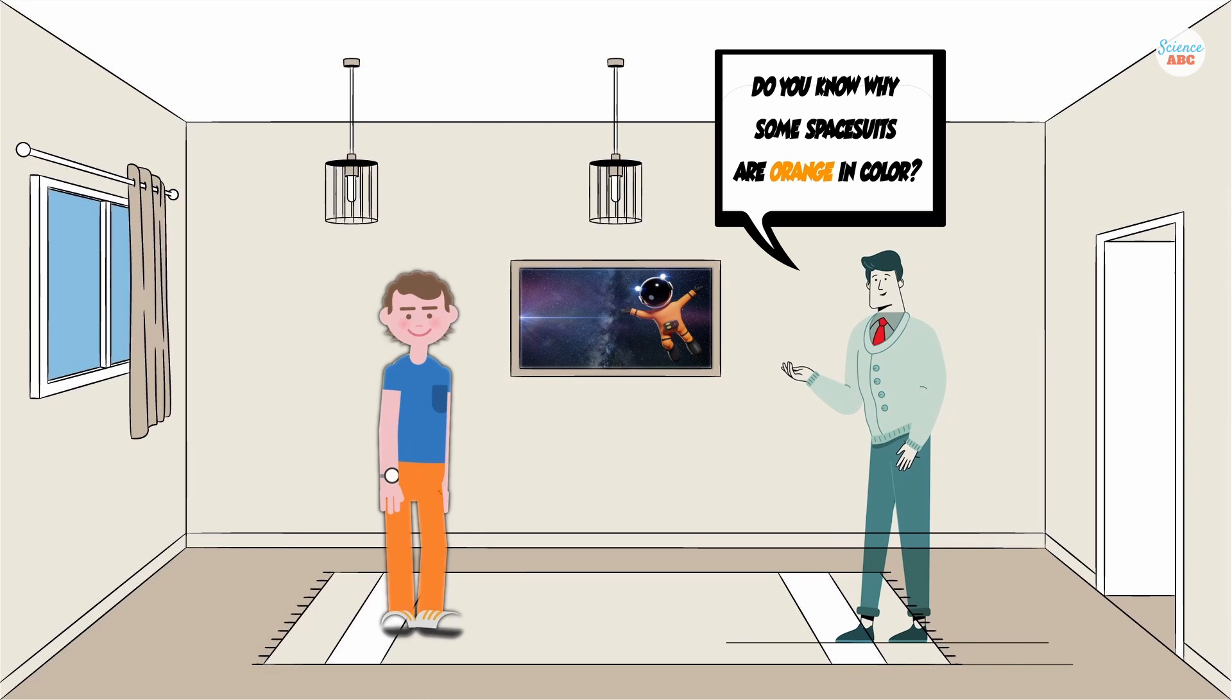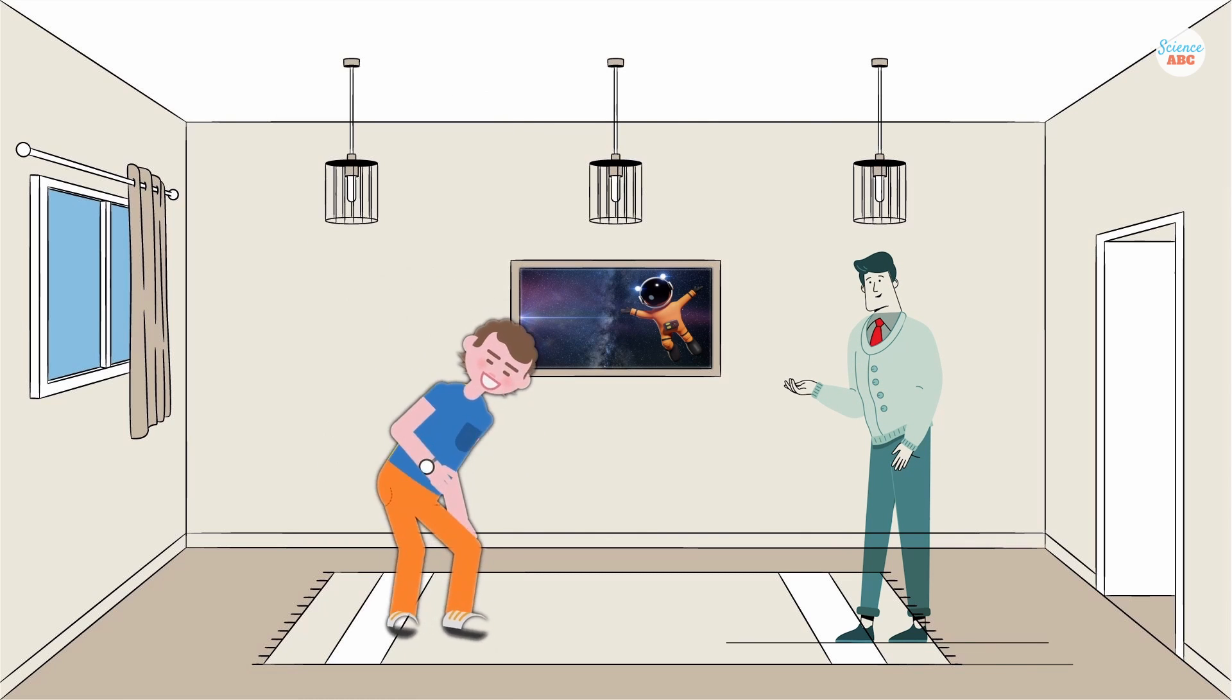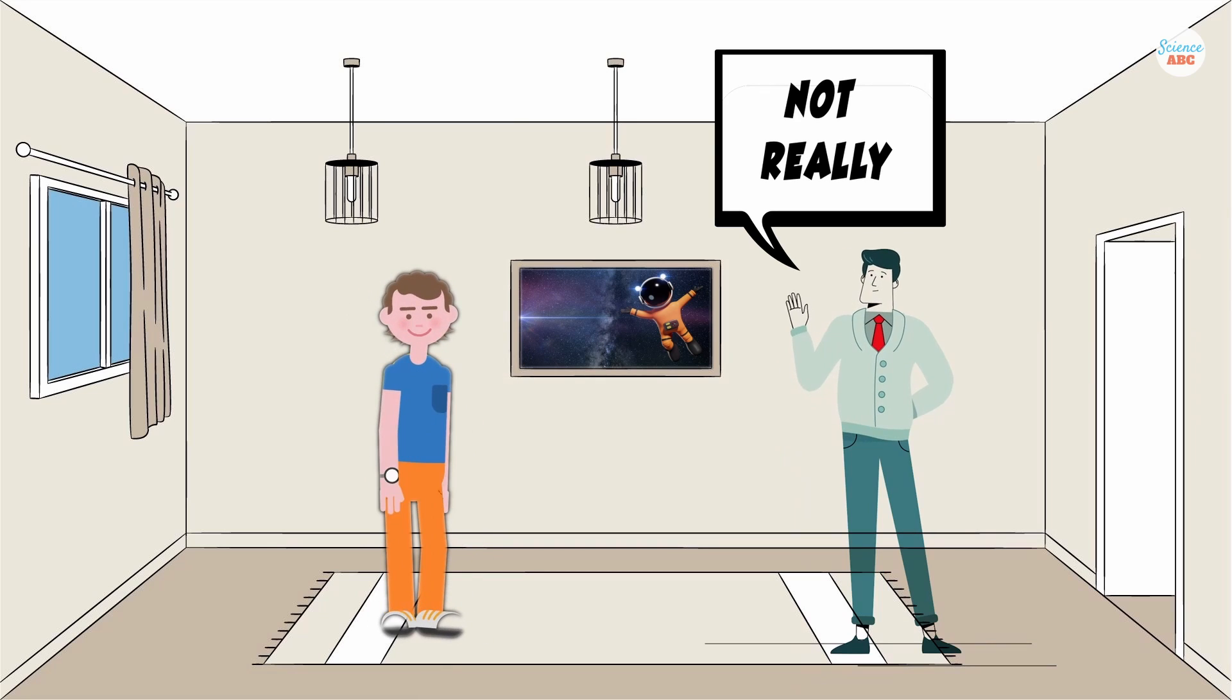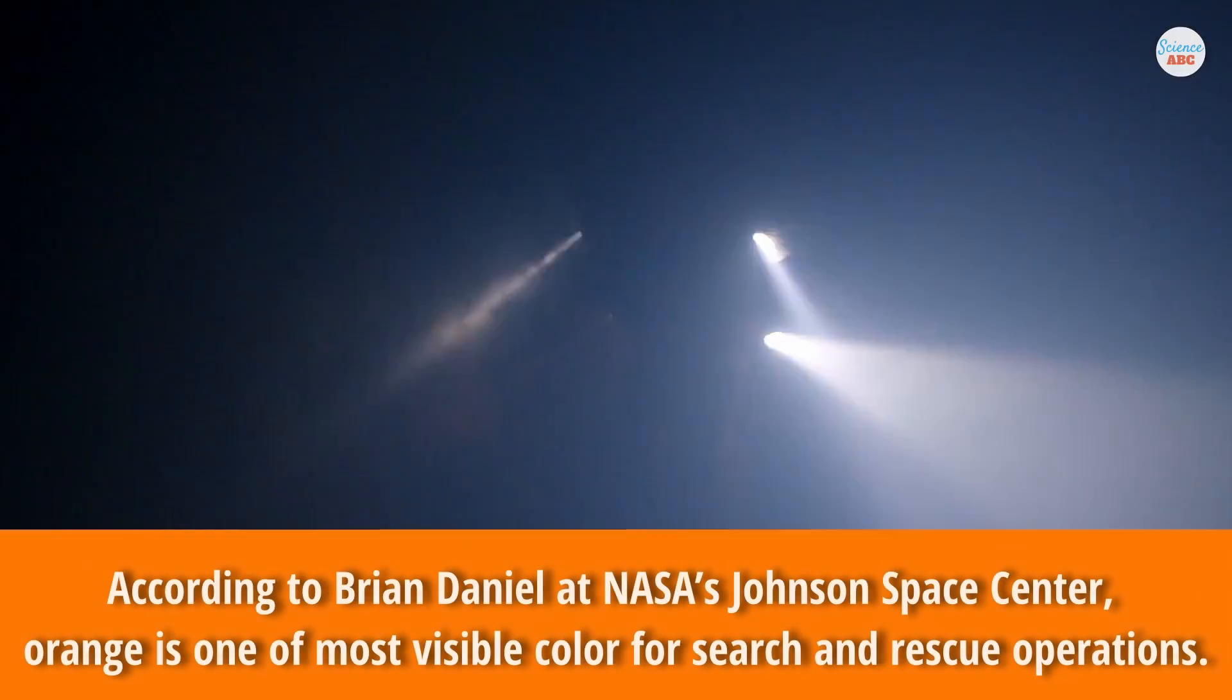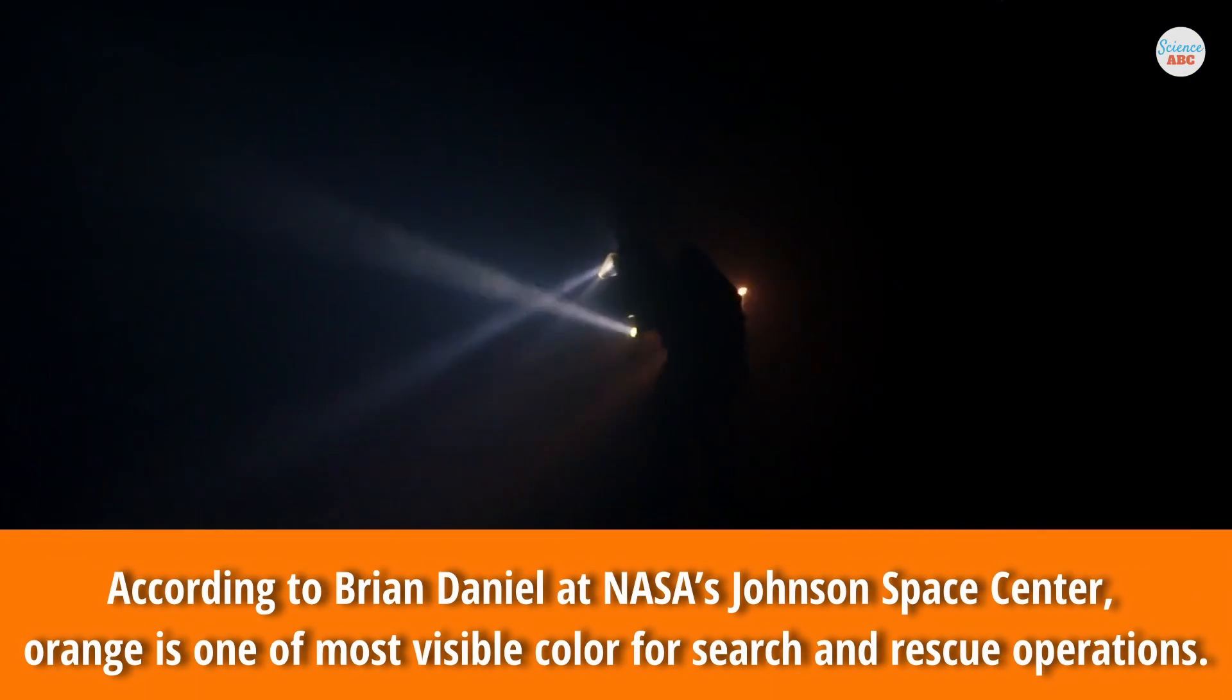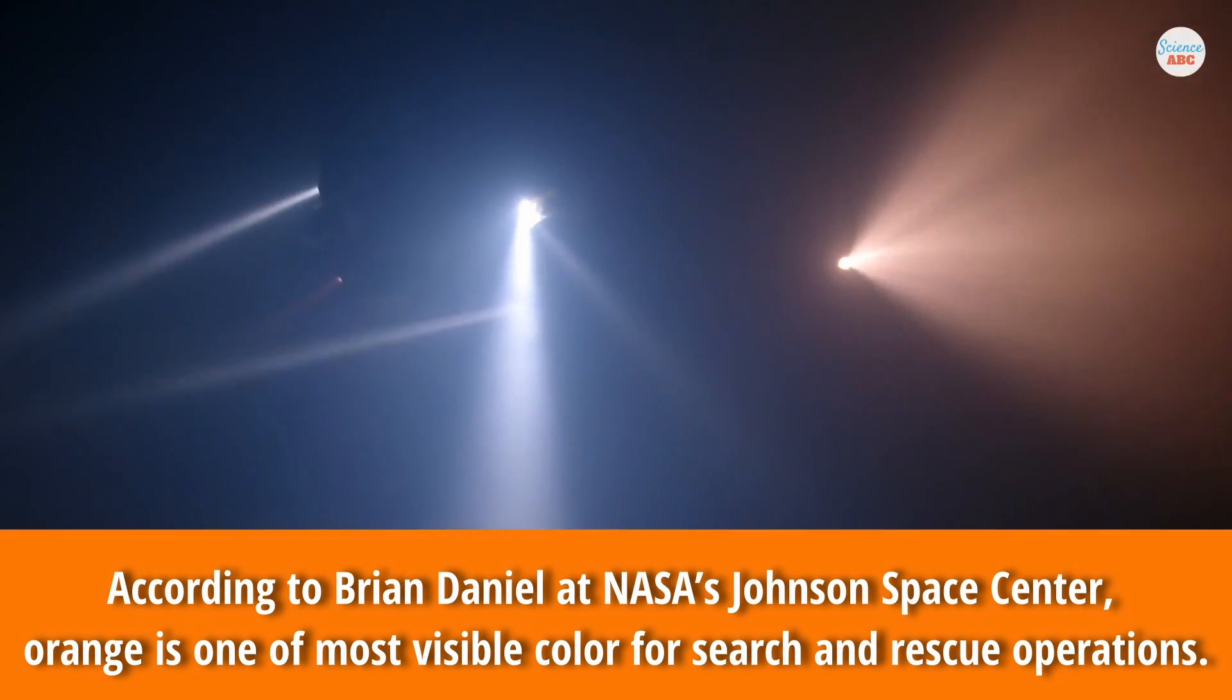In terms of why these suits are orange, well, it's not that NASA thought this color would look cool. There's more to it than that. It's highly visible for search and rescue, and it is one of the most visible colors, especially for sea rescue, as the explanation from a shuttle crew escape subsystem manager, Brian Daniel, at NASA's Johnson Space Center in Houston.